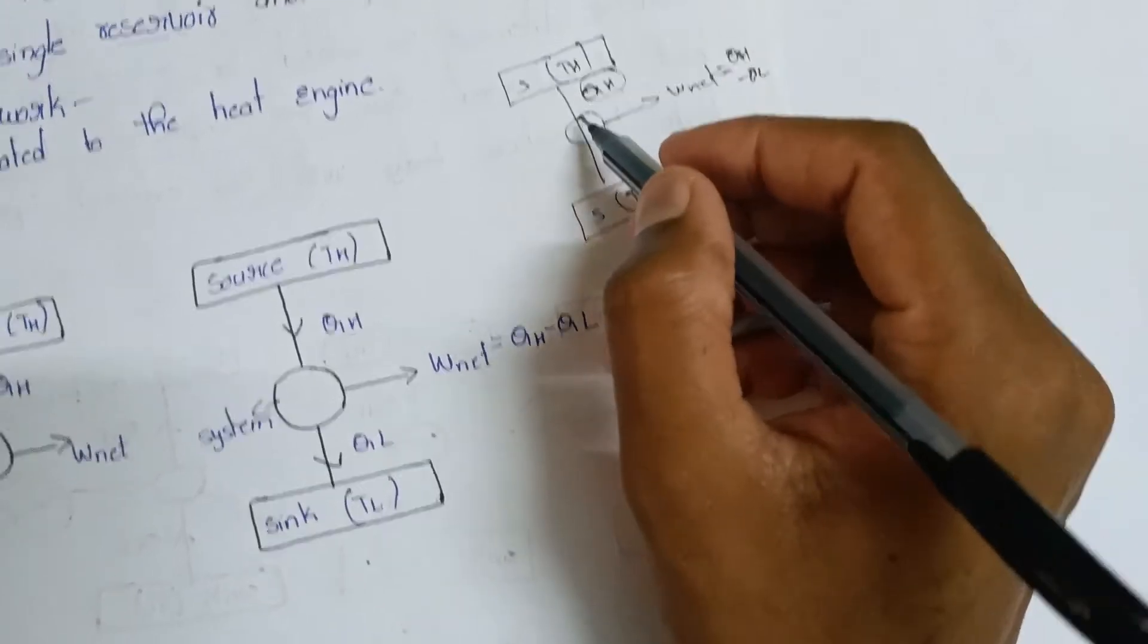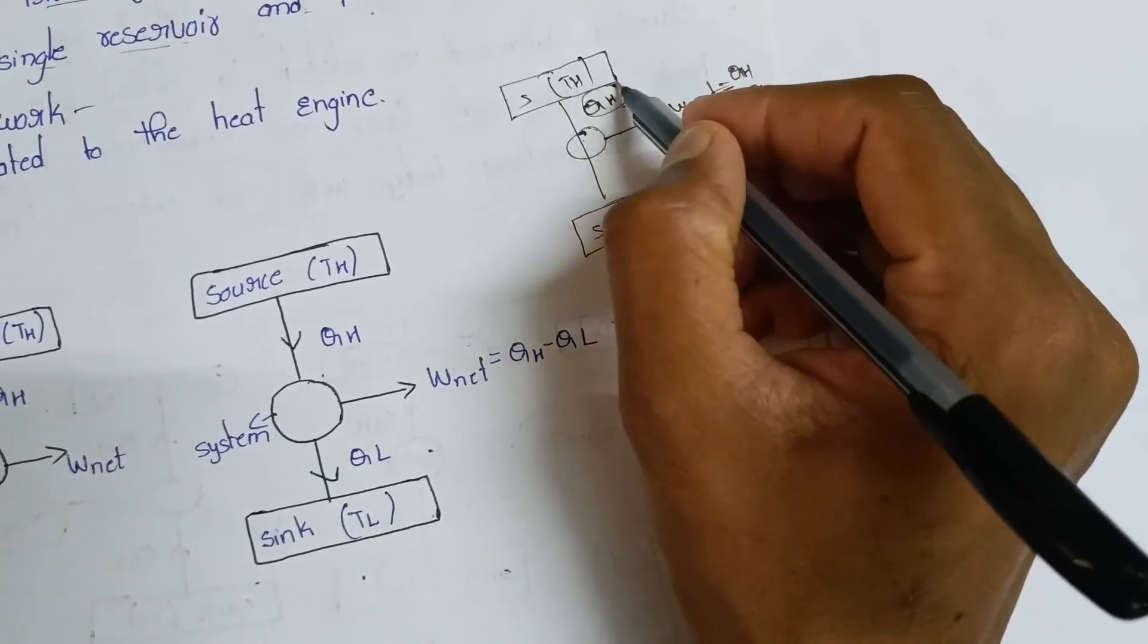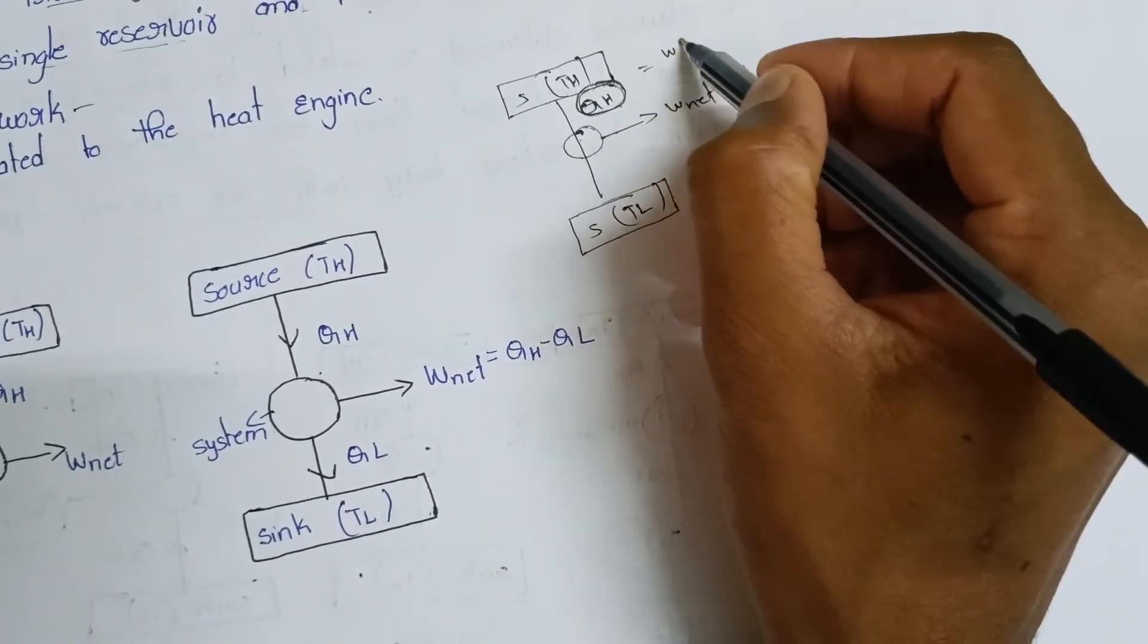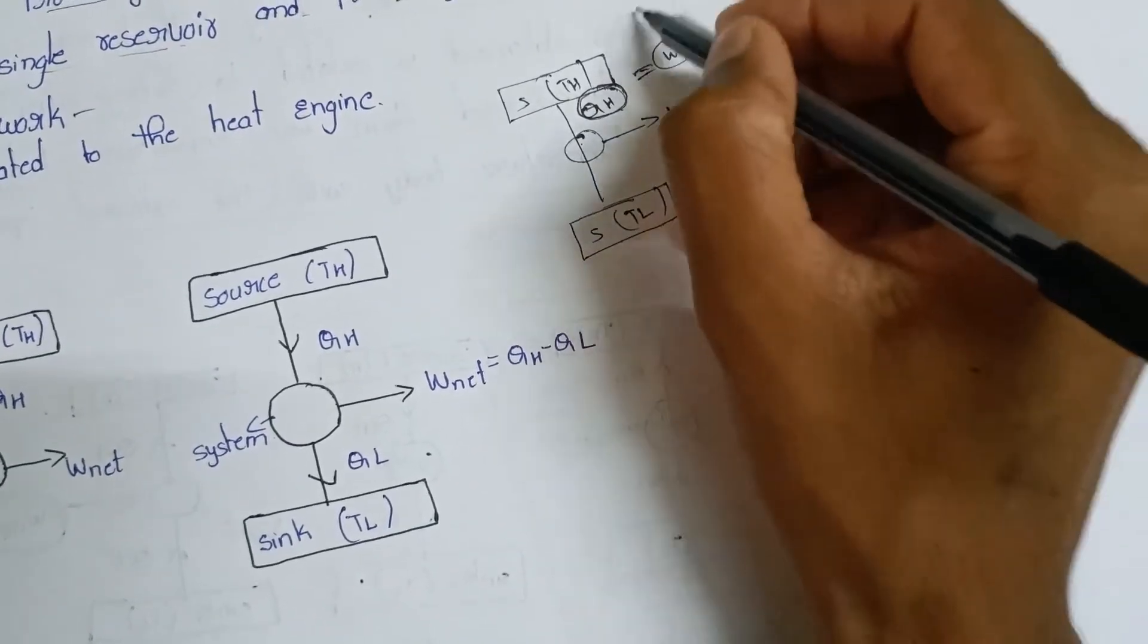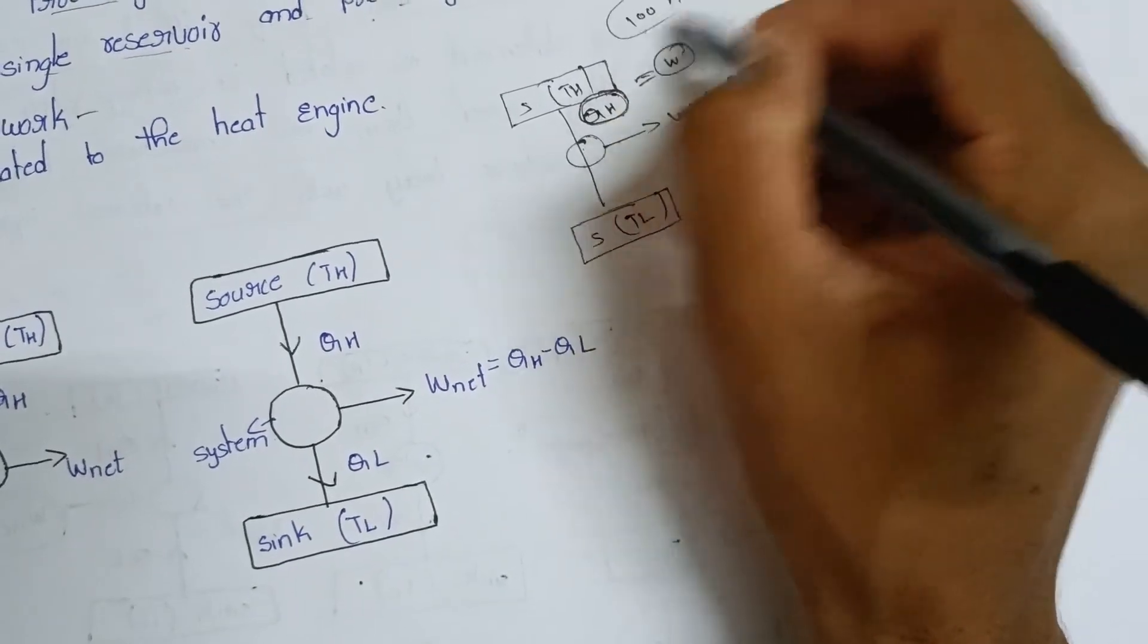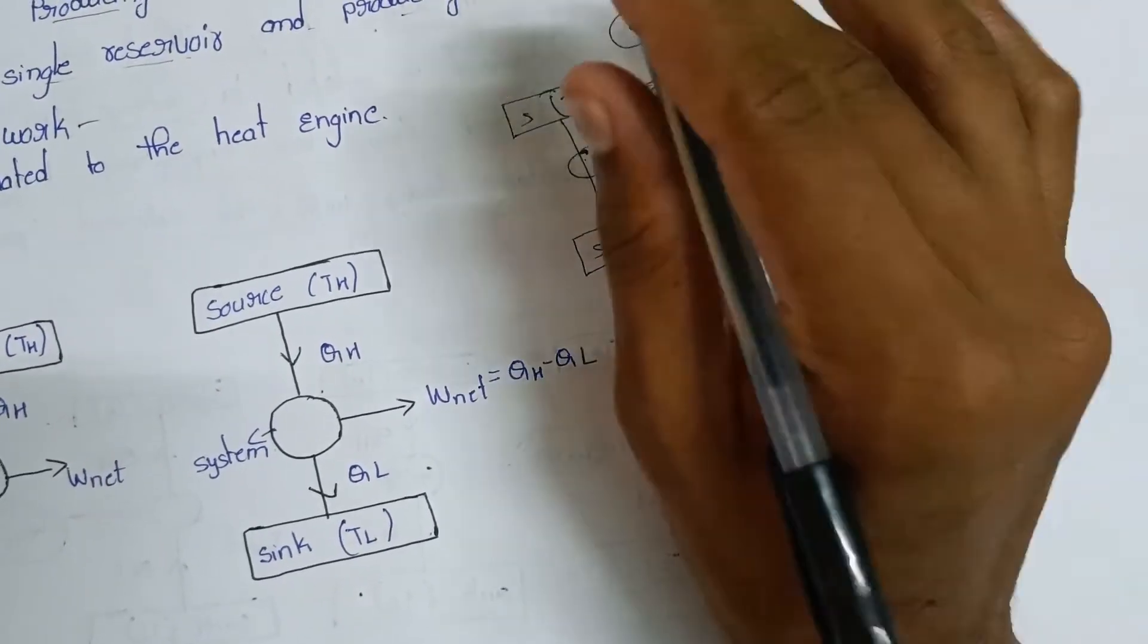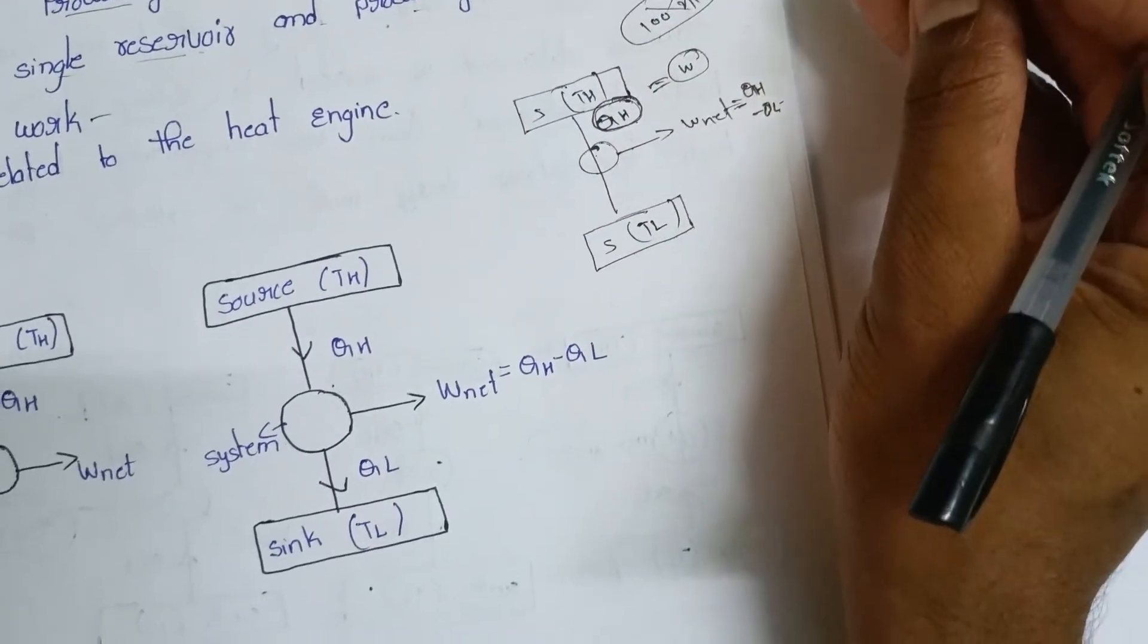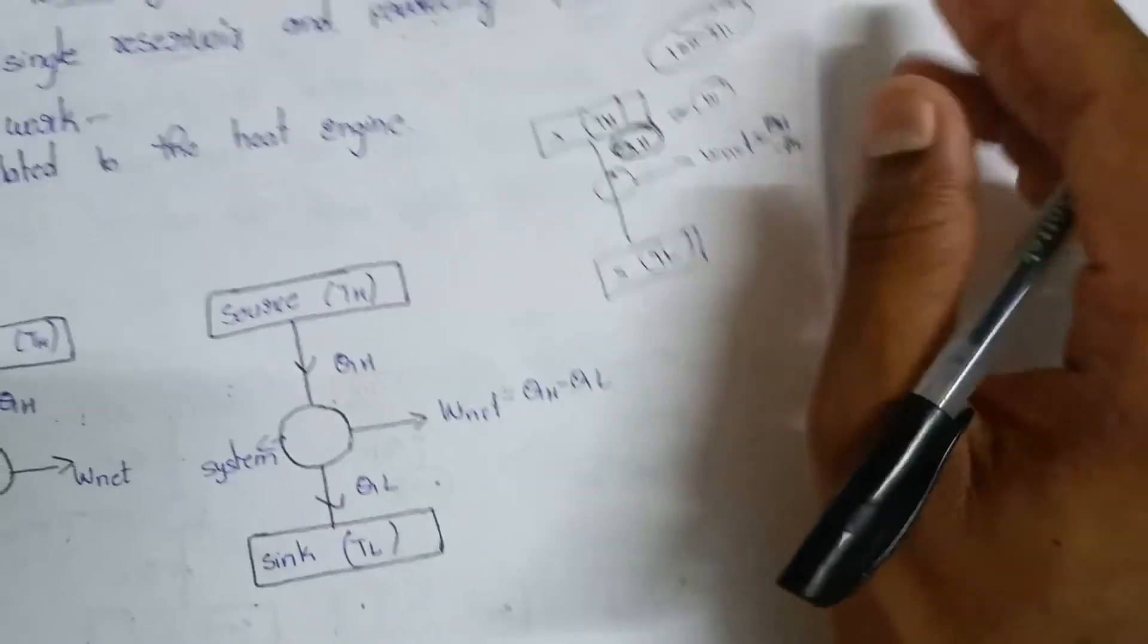The first statement means if we get the same heat as output, it will be 100% efficiency. If we get the same heat output, it will be impossible. This is the definition.